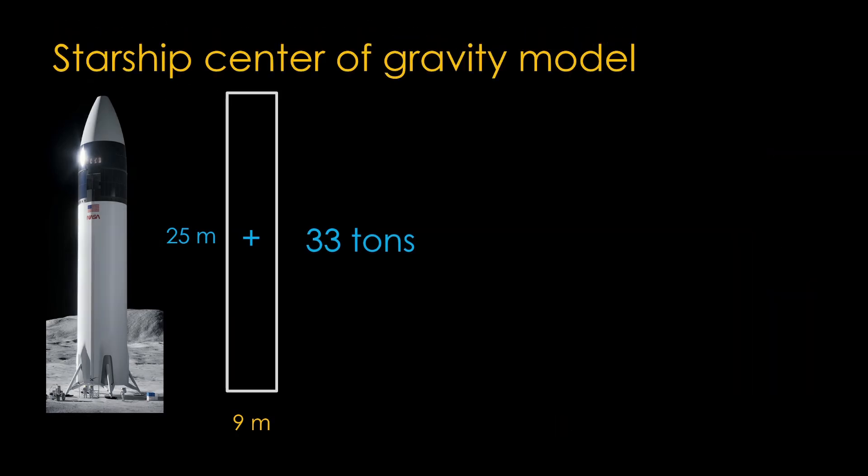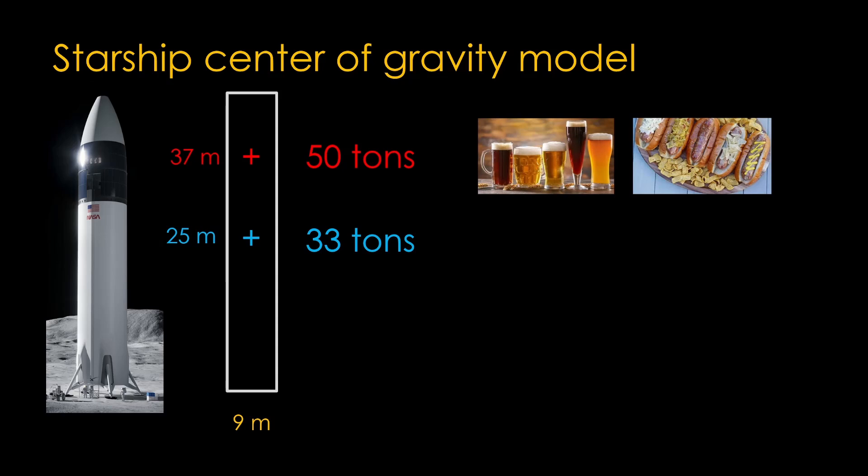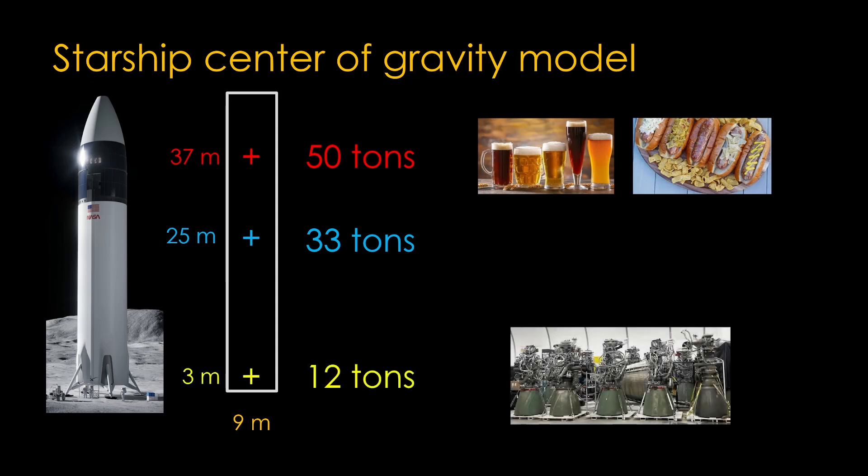There are two other significant mass concentrations. There's a payload section that starts roughly 32 meters off the ground, and I'm going to assume the center of mass for the payload is a few meters higher, at 37 meters. The payload is 50 tons, which will leave plenty of room for the most important payload items. There is engine mass right near the tail, with a center of gravity at about 3 meters. Six engines at about 2 tons each would be 12 tons. And yes, the raptors might be lighter than that, but there's other mass back there as well.